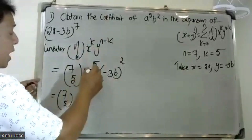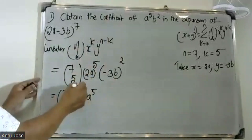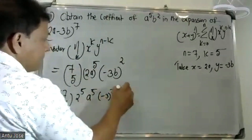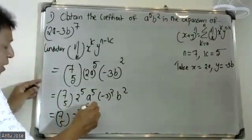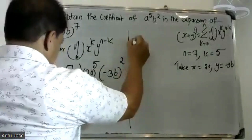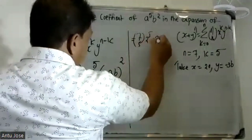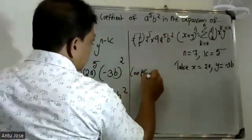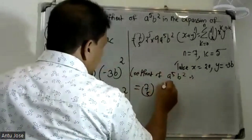So we have 7C5 times 2a raised to 5 times 2 raised to 5 times minus 3 squared. That gives us 7C5 times 2 raised to 5 times a raised to 5 times 9. The coefficient of a raised to 5 b squared is 7C5 times 2 raised to 5 times 9.